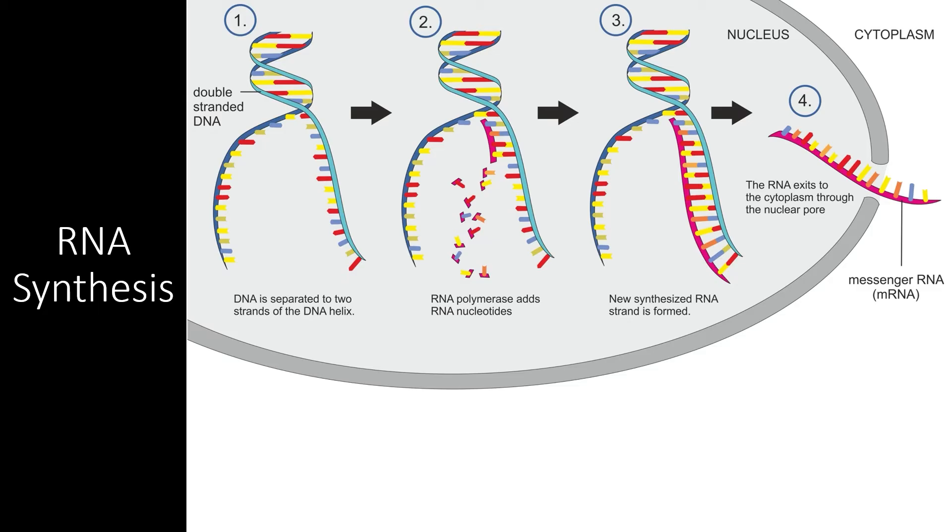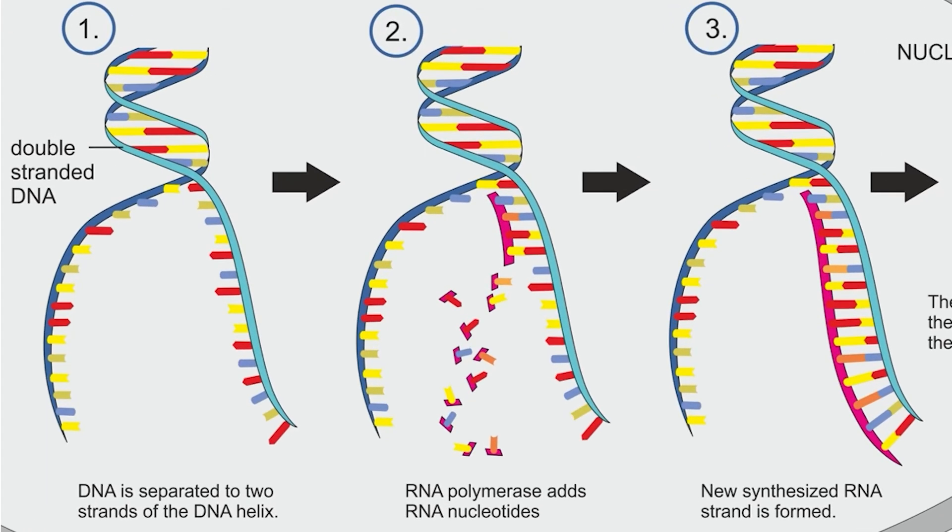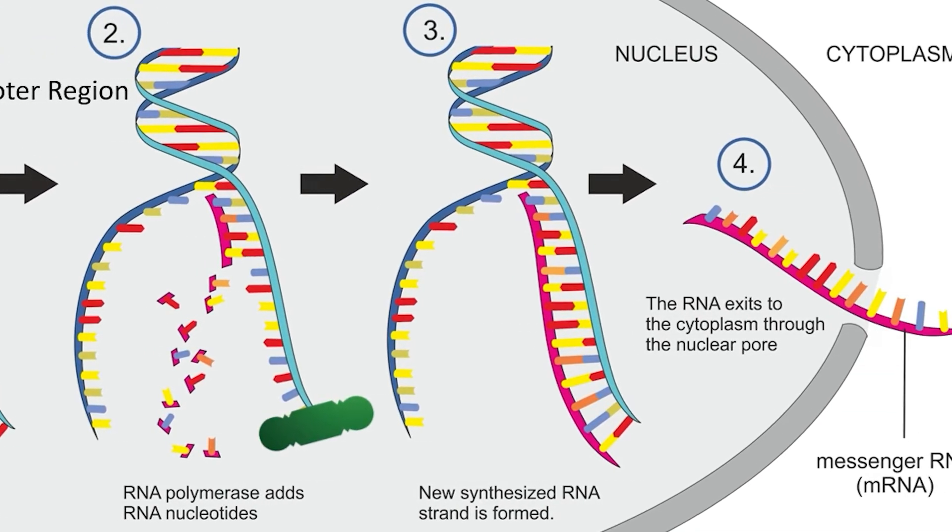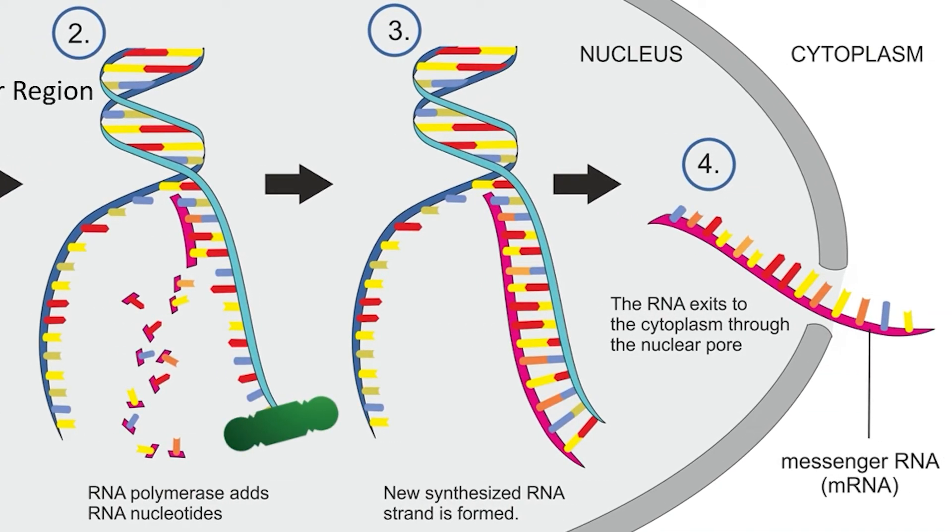RNA synthesis works in a very similar way to DNA synthesis. An enzyme, RNA polymerase, attaches to the DNA strand at a specific set of nucleotides known as the promoter region. The RNA polymerase moves along the strand in the 3' to 5' direction along the DNA molecule, adding nucleotides to the growing RNA molecule. When the RNA molecule is complete, it can exit the nucleus to be translated into a protein.